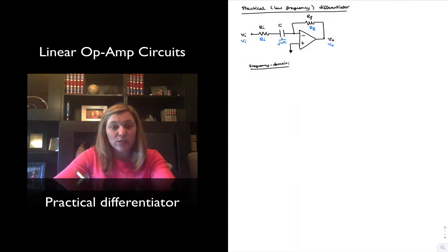I can also see that this resembles the structure of an inverting amplifier with resistor Rf, the impedance in the feedback path just being Rf, and then we will have the series combination of Ri and 1 over j omega c as the input impedance.